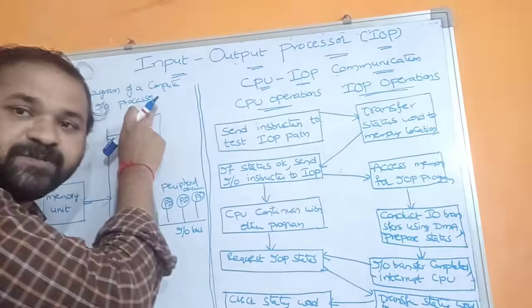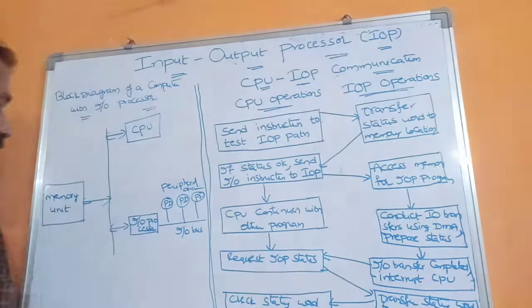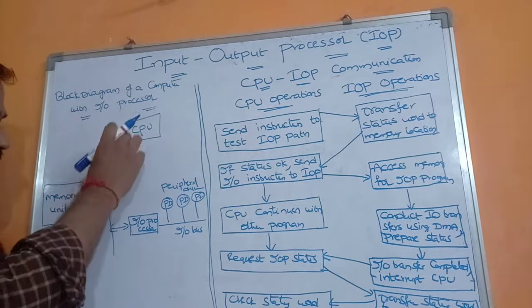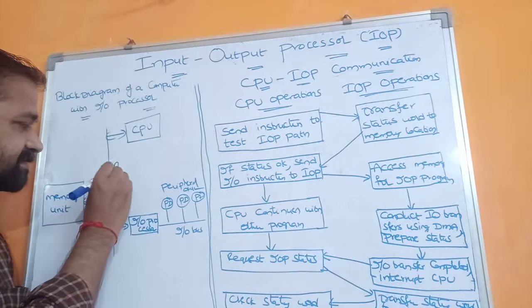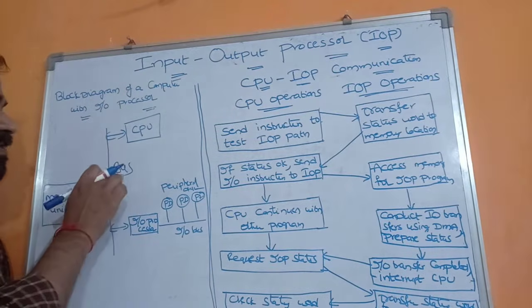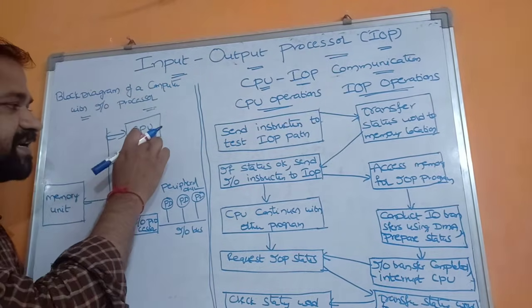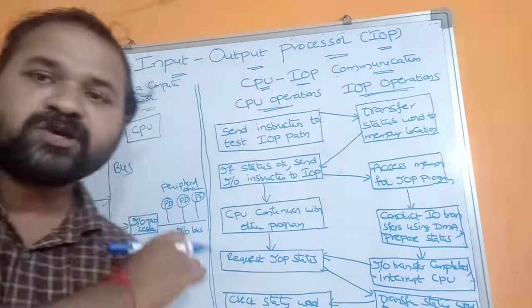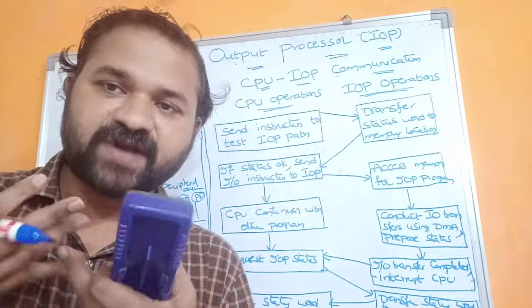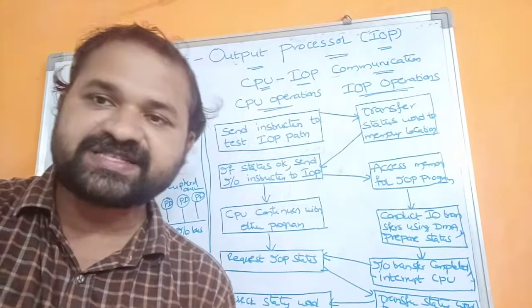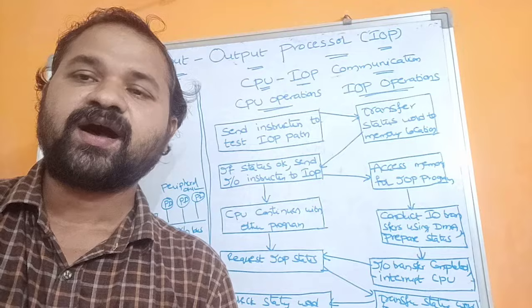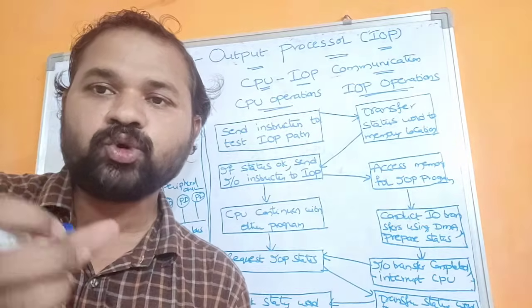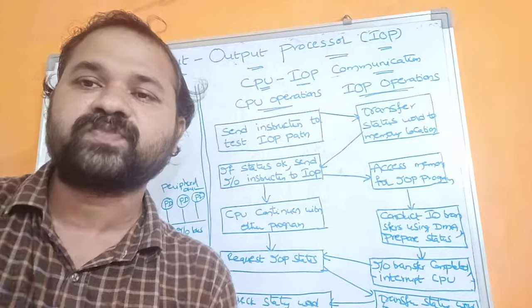Let us take this block diagram of a computer with an Input Output Processor. Here we have a memory unit and a bus. With the help of this bus we have connected the CPU as well as the Input Output Processor. The CPU is mainly useful for computation purposes and for executing instructions.